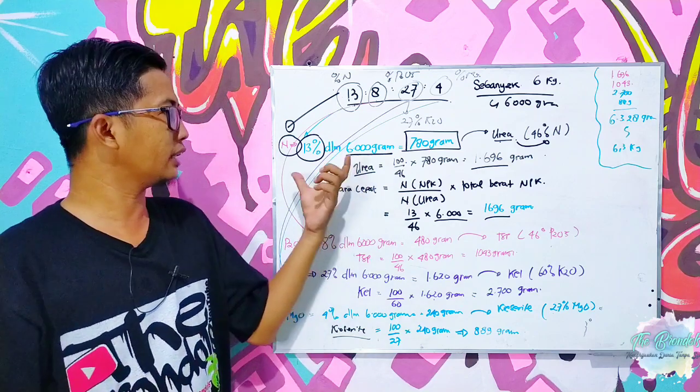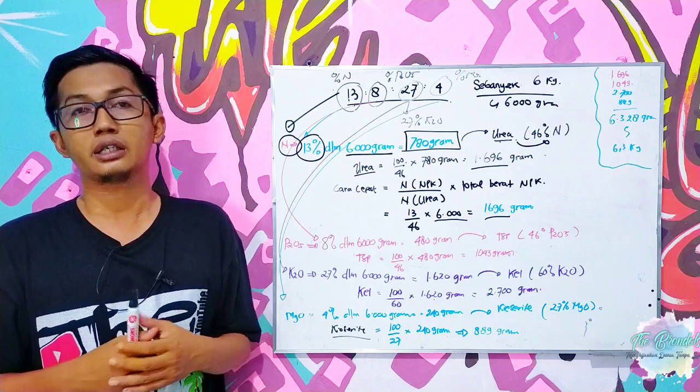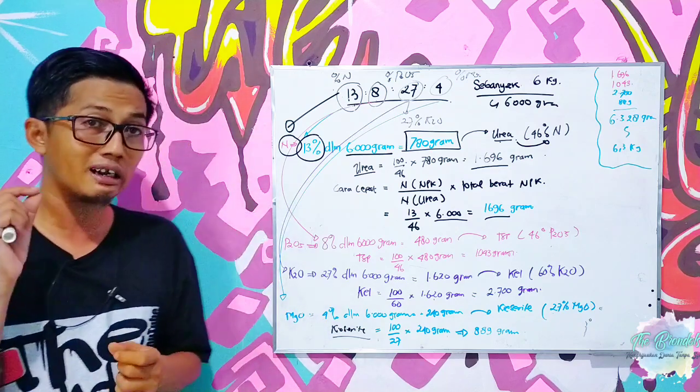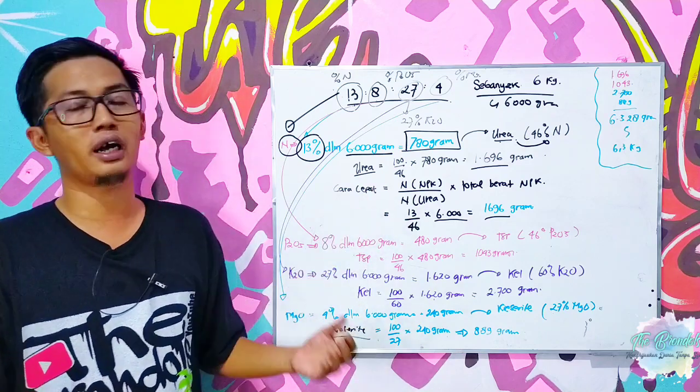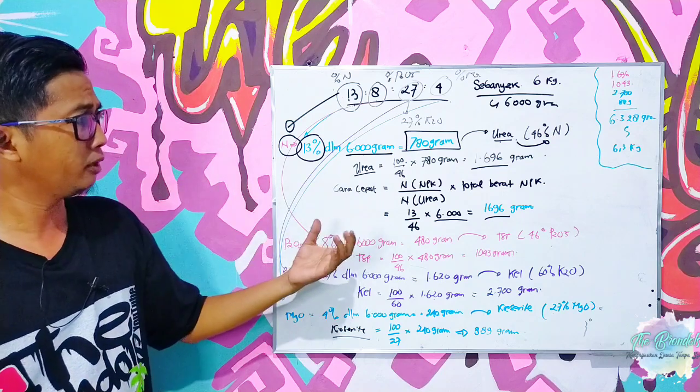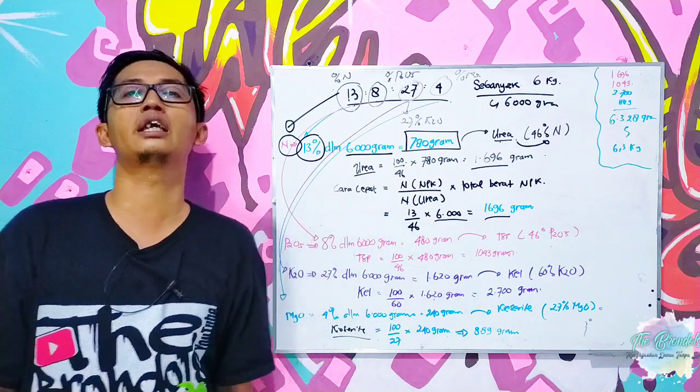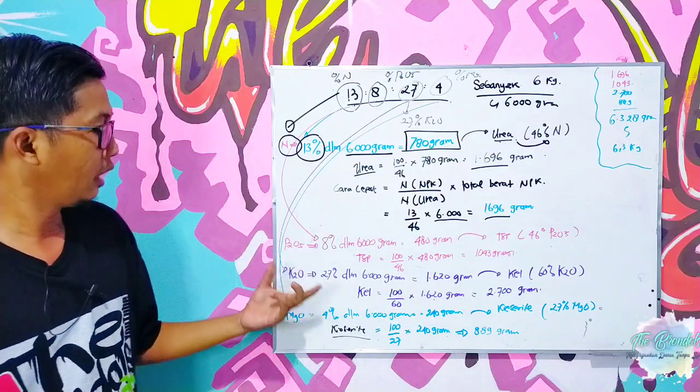Nah ketika kita nitrogen ini menggunakan selainnya urea, kita juga harus paham benar bahwa misalnya kita menggunakan ZA dengan kandungan 21 persen nitrogen, namun ada 24 persen sulfurnya. Yang mana bahwa sulfur juga pasti akan berpengaruh terhadap kondisi sistemnya, karena bahwa ZA sendiri atau Zawilzeruramonia pasti akan memiliki reaksi yang lebih asam.